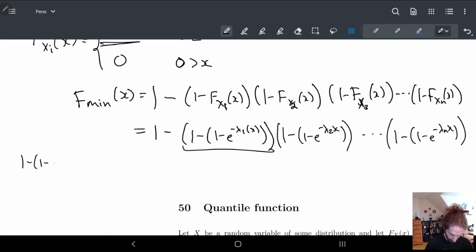One minus (1 - e^(-λ₁x)). This is just 1 - 1 + e^(-λ₁x). So these ones cancel and I just get e^(-λ₁x). So really I have (1 - e^(-λ₁x)) times e^(-λ₂x) times e^(-λ₃x)... times e^(-λₙx). These we can now add together and we get 1 - e^(-(λ₁ + λ₂ + ... + λₙ)x).